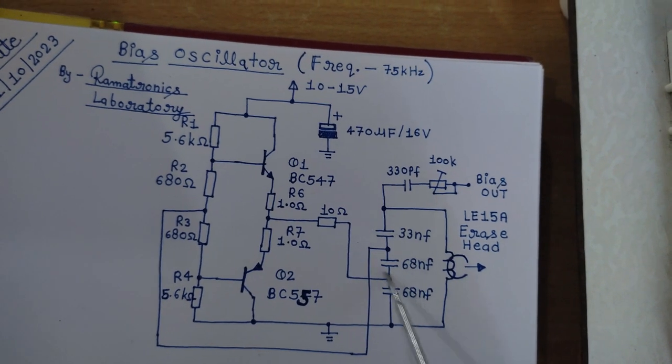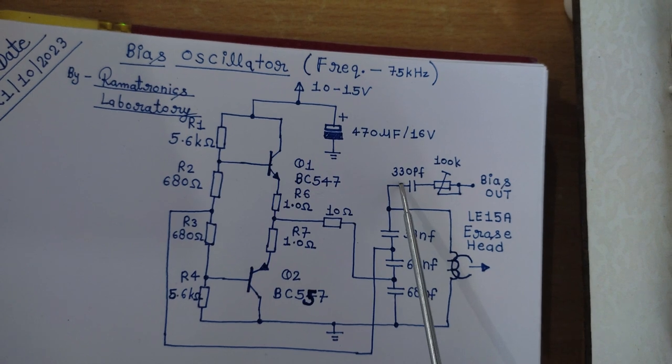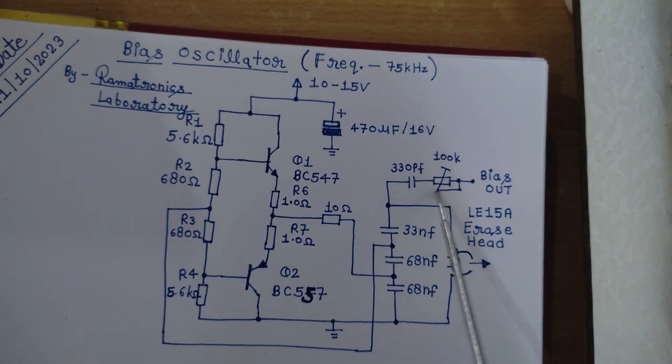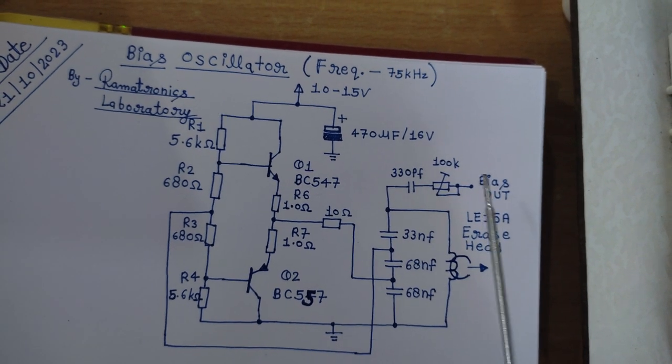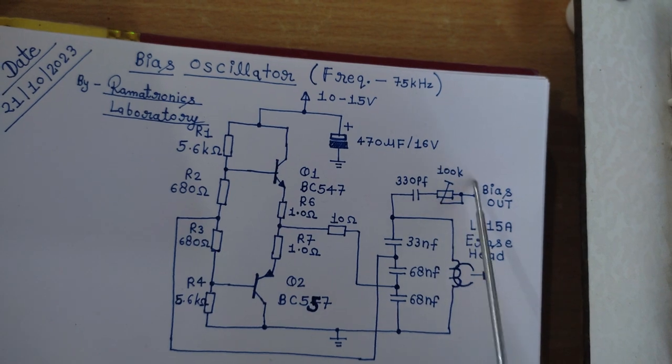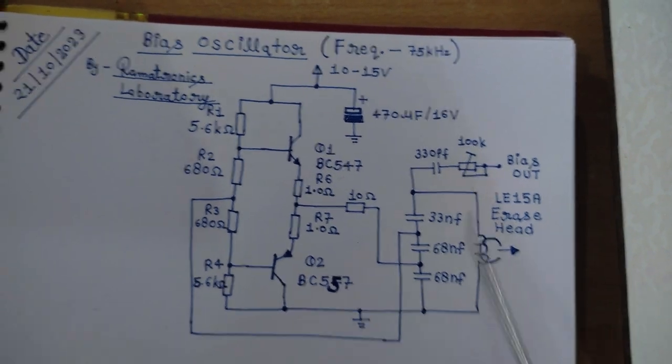And I have taken the output of the BIOS oscillator from here. So this is a 330 picofarad capacitor and it is a 100 kilo ohm preset. So we can adjust the amplitude of the output by changing the value of this preset resistor.